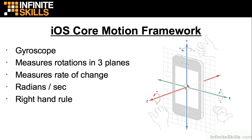The gyroscope measures rotational forces, and it measures the rate of change. With the accelerometer, you can lay the phone completely flat on the table and measure the gravitational force. But with the gyroscope, if you just lay it flat on the table, you won't see a thing — it actively has to be turned in one direction or another. It's measured in radians per second, and there are two pi radians in a circle. So 360 degrees is equal to two pi radians — you might need that math in the future.